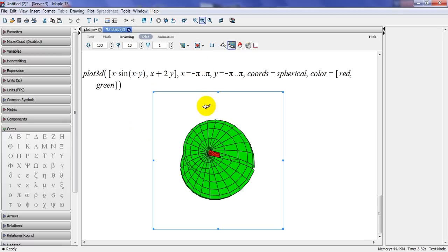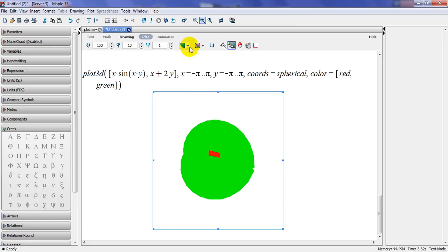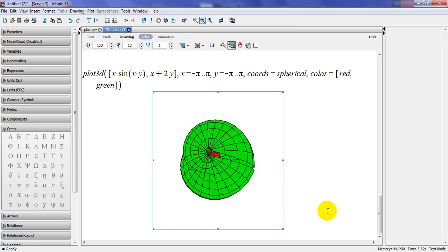When you are in 3D plot, you have other options here. You can change here. You can make it a wireframe. You can have it without any mesh. Or you can do it as it is.